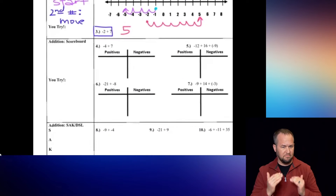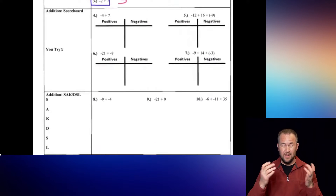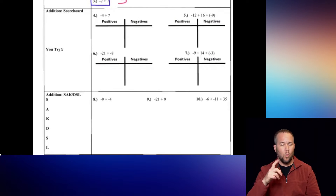Now let's move on to the scoreboard method. The scoreboard is like a normal sports scoreboard — there are two teams, and in this case the two teams are always the positives and the negatives. For the scoreboard, you ask yourself two questions after putting the scores on each team: first, who won, and second, by how many.